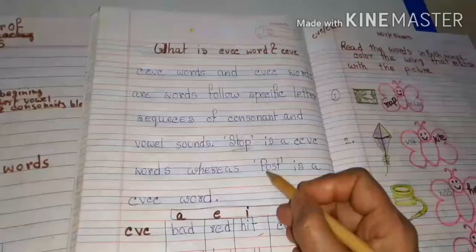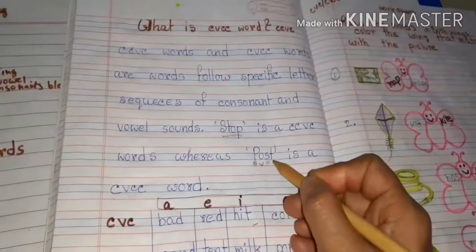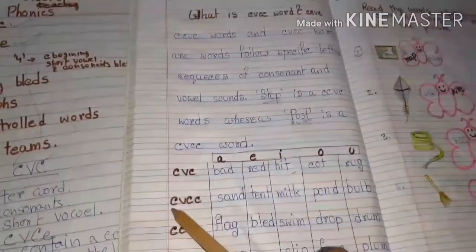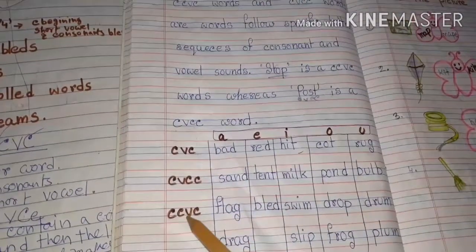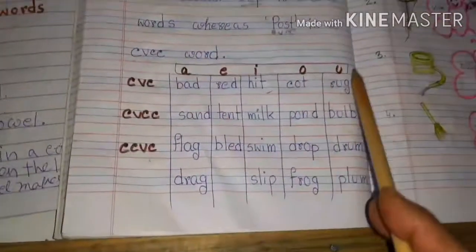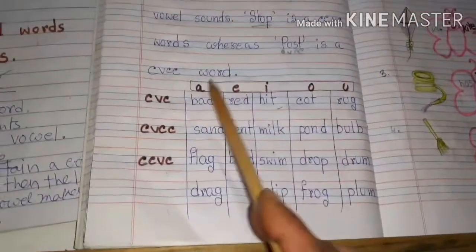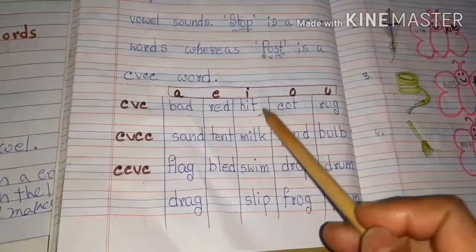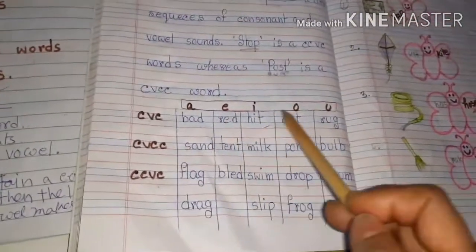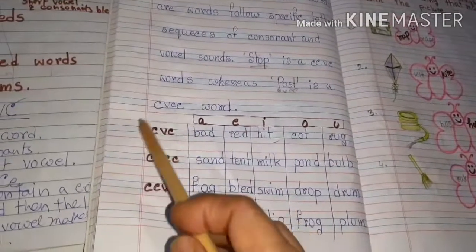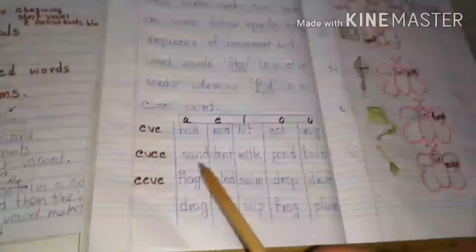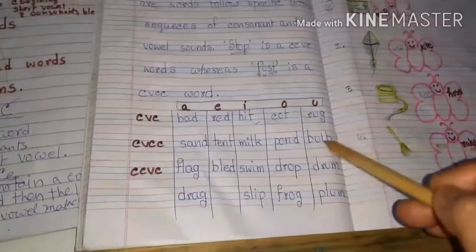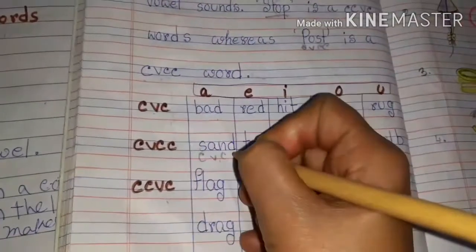Now how can you differentiate CVCC and CCVC words? Let me explain with a few words. A-E-I-O-U are the vowels. CVC examples: bad, hit, cot, ruck — all following the CVC pattern. CVCC examples: sand, tent, milk, pond, bulb — that means CVCC.